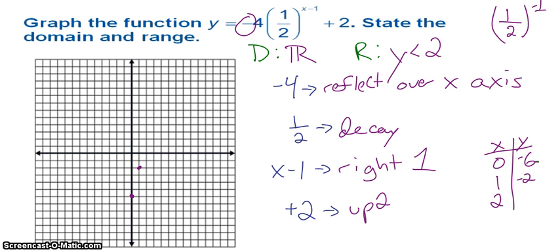When I plug in 2, I've got 1/2 to the 1st. 1/2 times negative 4 is negative 2. Negative 2 plus 2 is 0.